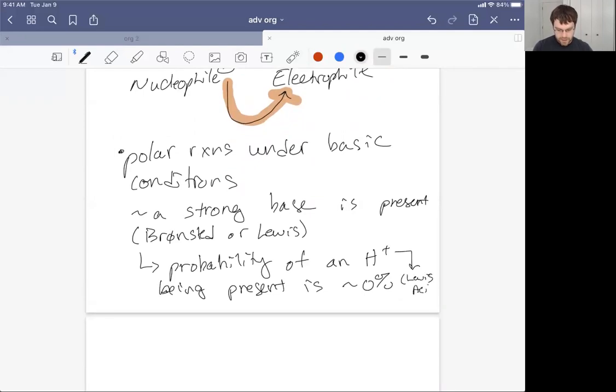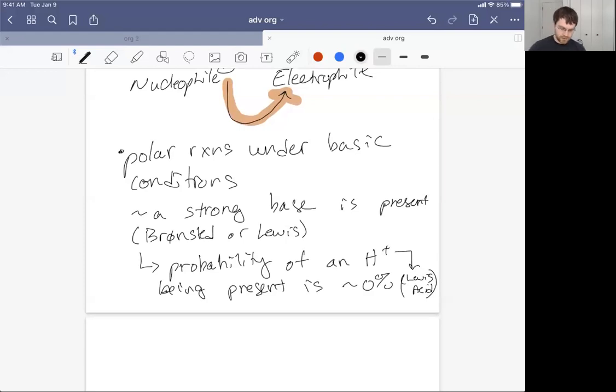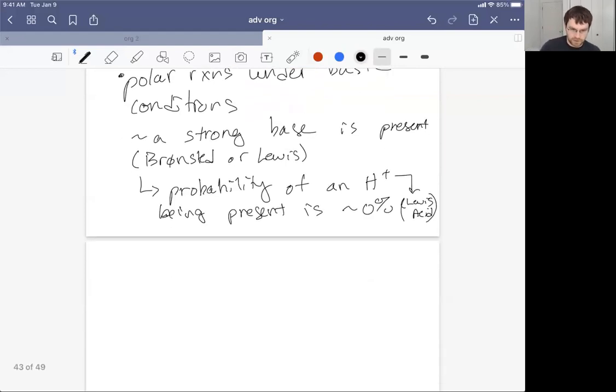That's the big takeaway. When you've got a polar reaction under basic conditions and you're trying to draw curly arrows, the involvement of H plus, for the most part, just can't happen. You identify that it's under basic conditions, and as you're drawing your mechanism, you don't want to invoke H plus. That would be breaking a cardinal rule, like we just don't have H plus around if we're doing a Grignard reaction, for example, because the H plus will destroy the Grignard reagent.